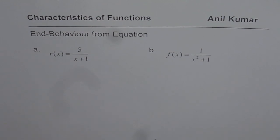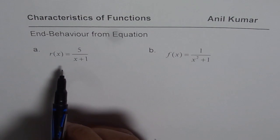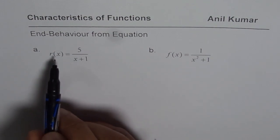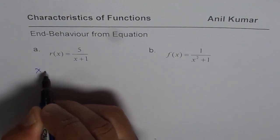Now what is end behavior? End behavior is the behavior of the graph of the function as x becomes negatively large value or x becomes positively large value. So we could write it like this.